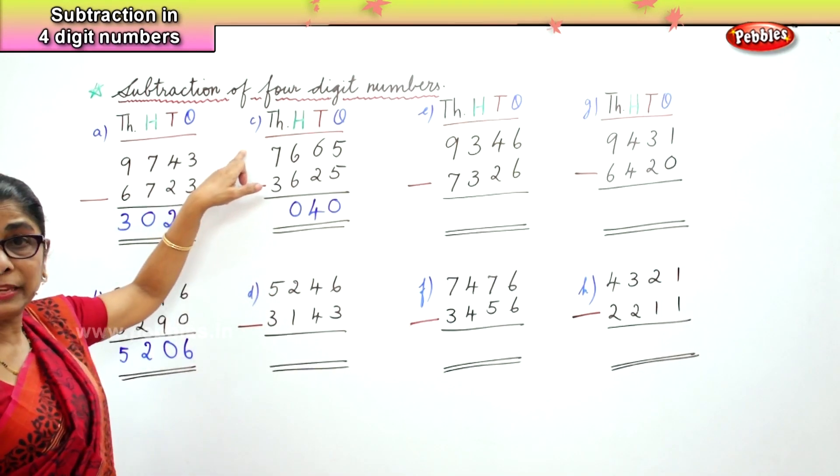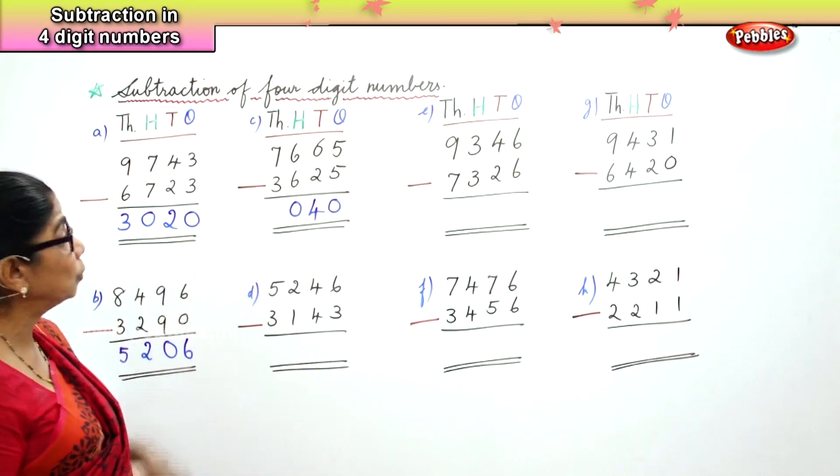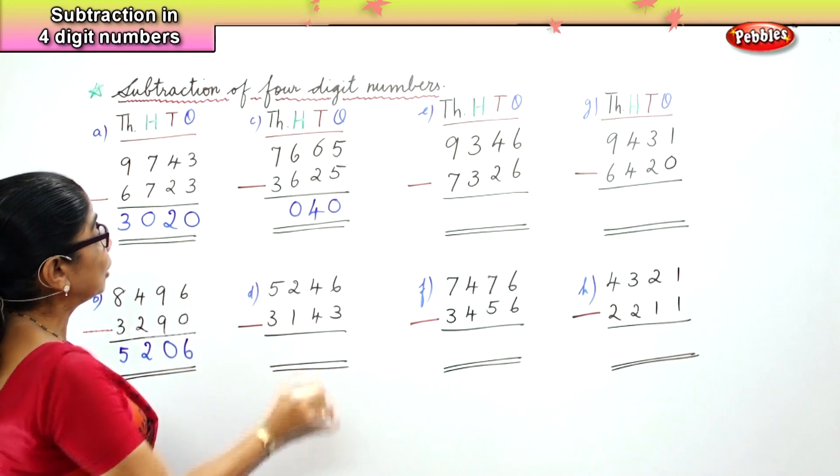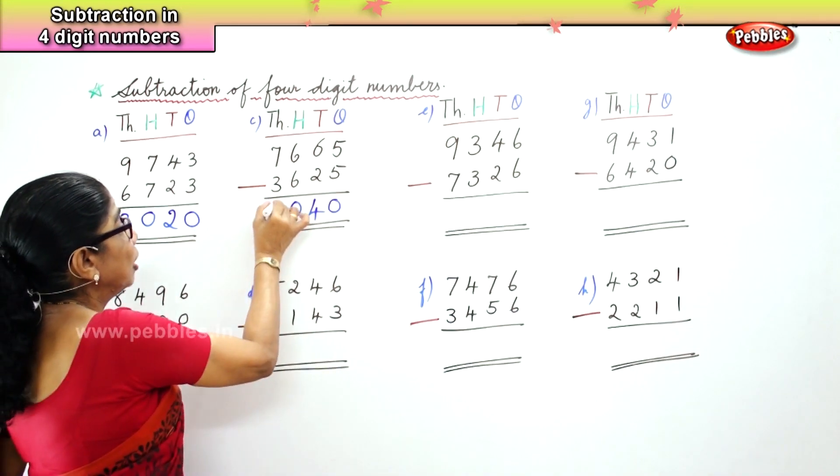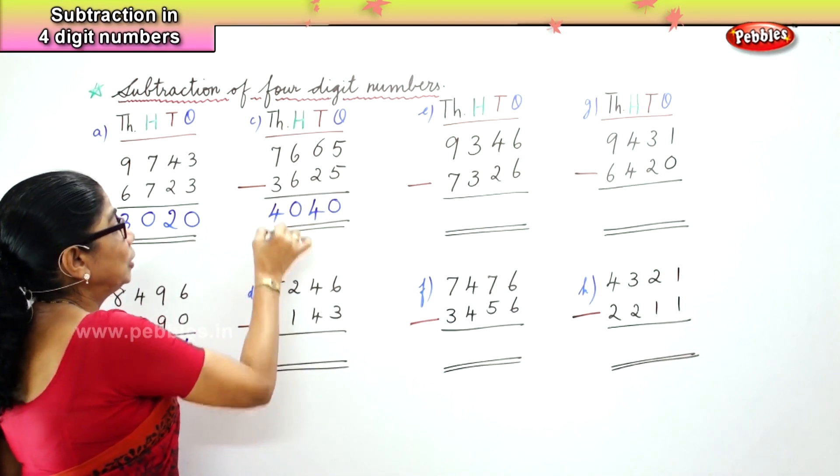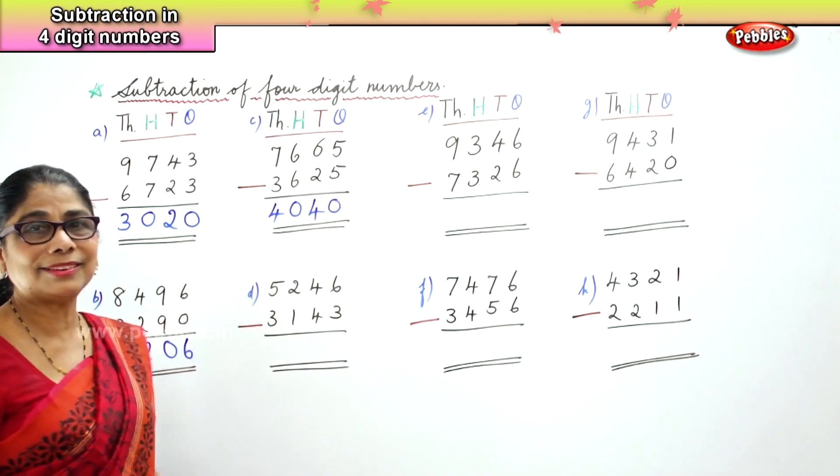In the thousands place, we have 7,000 minus 3,000 is 4,000.